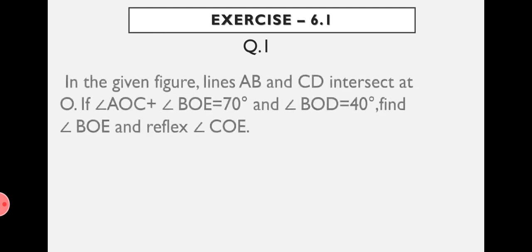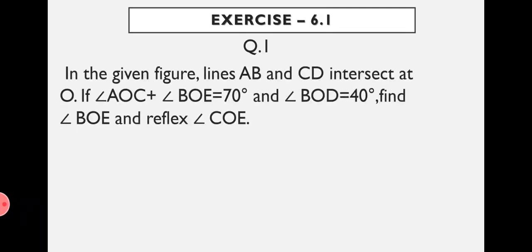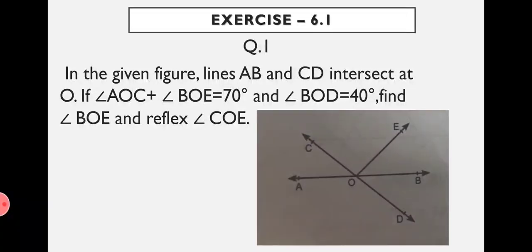In the given figure, lines AB and CD intersect at O. If Angle AOC plus Angle BOE equals 70 degrees and Angle BOD equals 40 degrees, find Angle BOE and Reflex Angle COE.